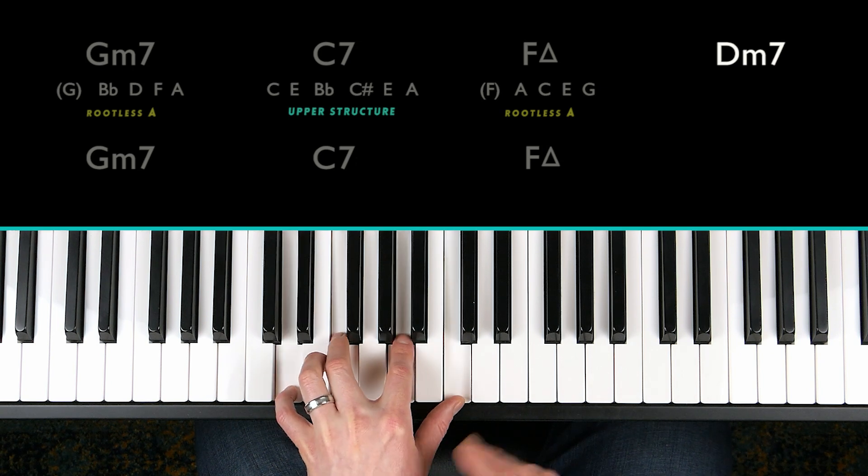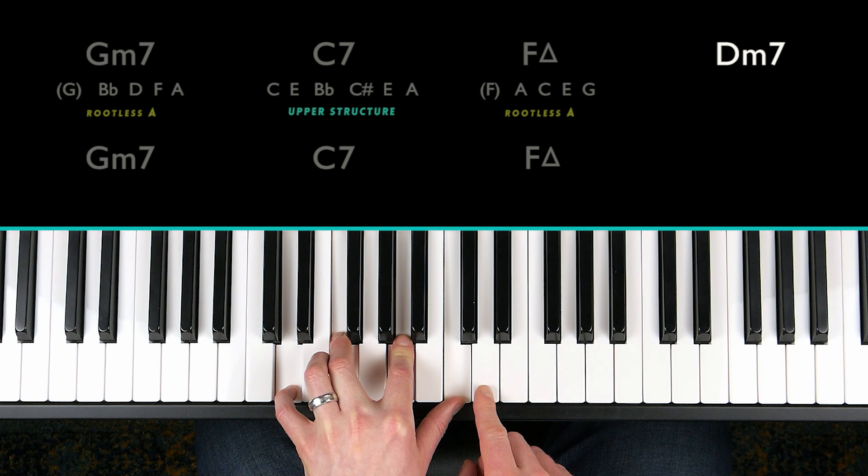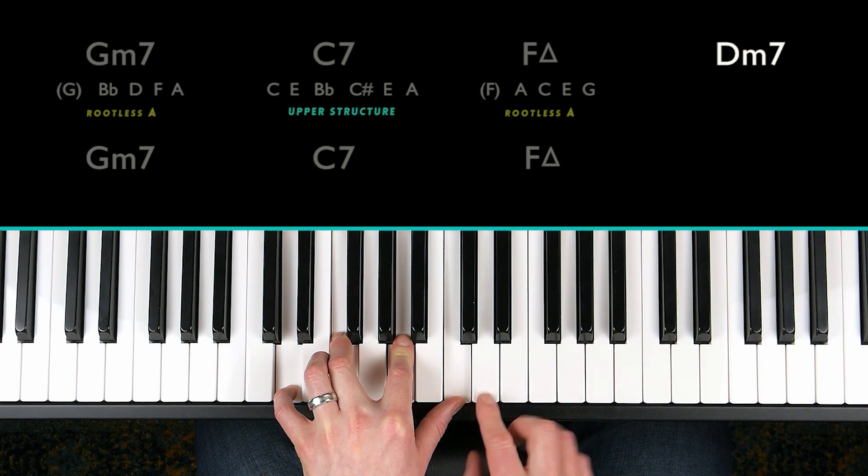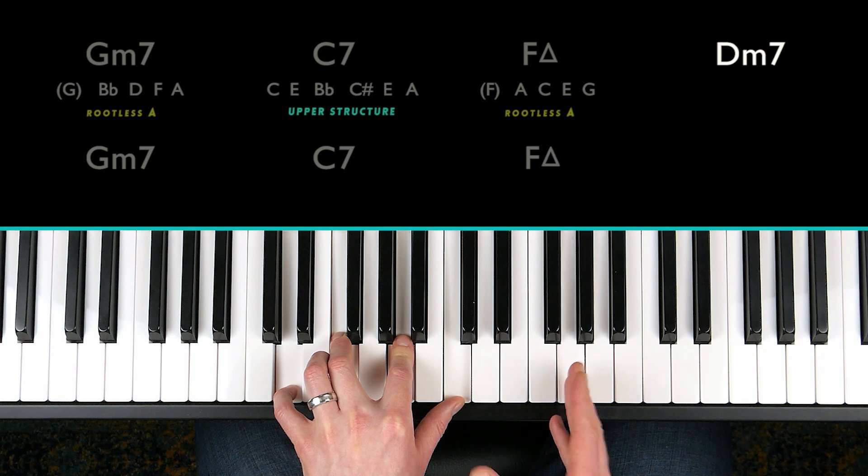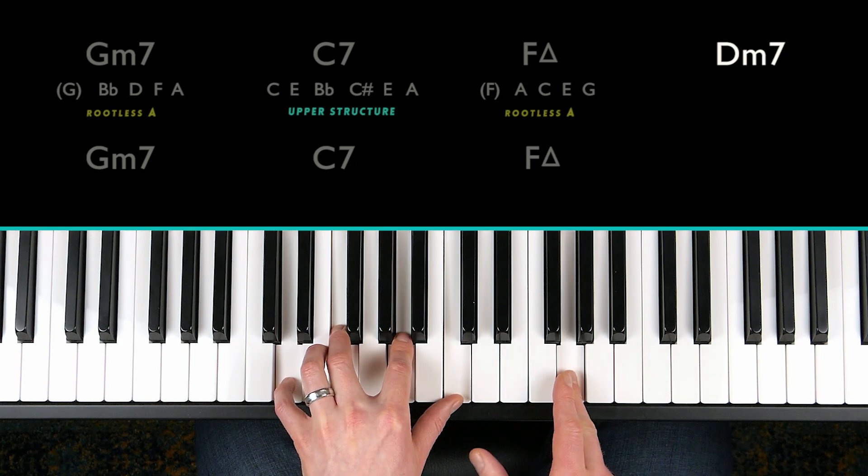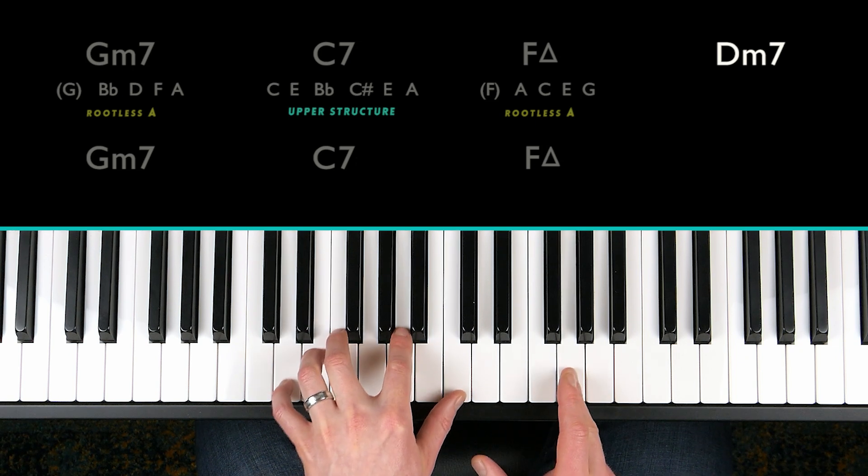Next, we have a D minor seven chord. The melody note is G. Which scale degree is G to D? Well, that is a fourth. So this is the fourth slash 11th. Both numbers mean the same note. So which voicing shall I use for this?